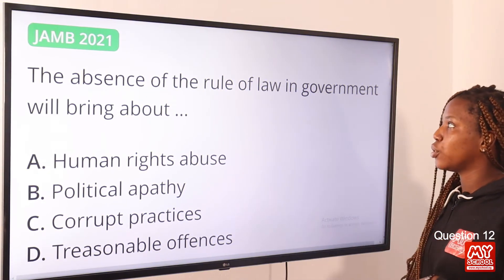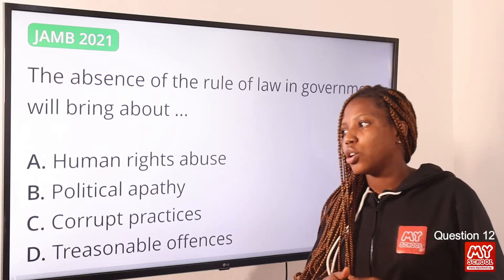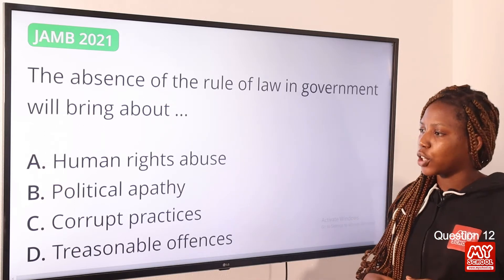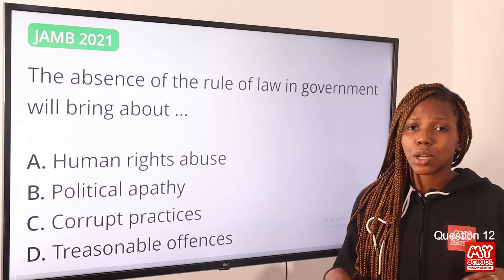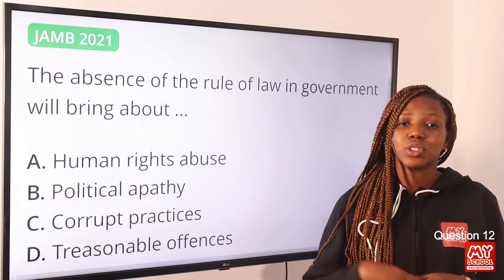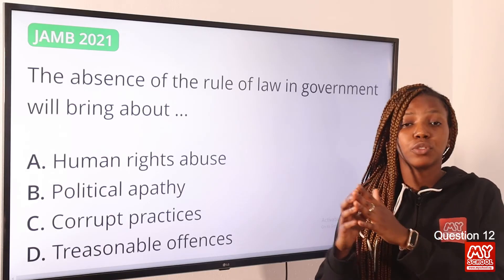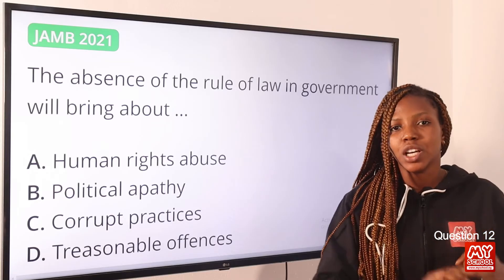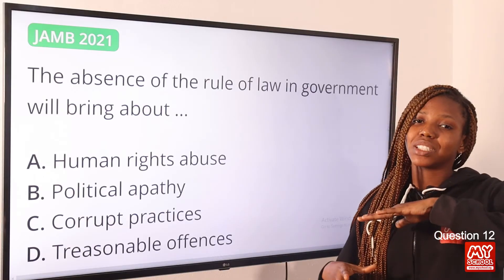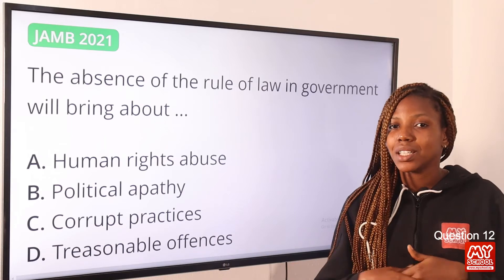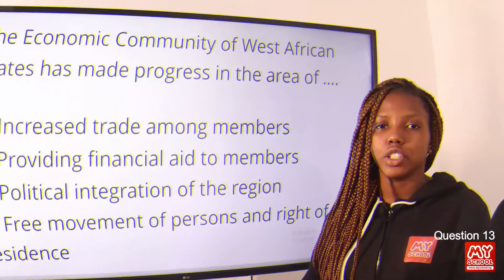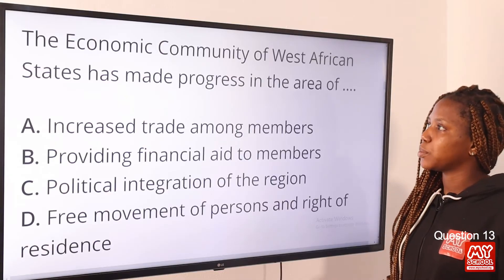Question twelve: The absence of the rule of law in government will bring about — the answer is human rights abuse. Rule of law is the supremacy of law over everyone — both government officials and citizens. Its provisions include the supremacy of law, equality before the law, and the existence of fundamental human rights. Without it, there is no equality, no human rights, and no supremacy of law. Option A is correct.